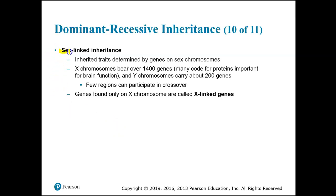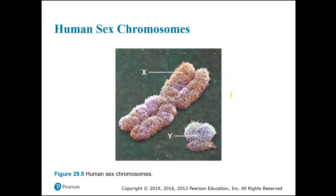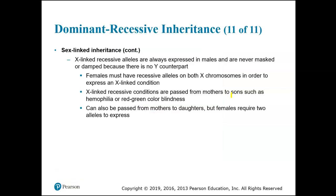Now we're going to move on to sex-linked inheritance. This is when the chromosome that contains the gene for this trait is the X sex chromosome. The gene is not found on the Y. So it's sex-linked, or X-linked, because the Y sex chromosome does not have that gene. These genes are only found on the X sex chromosome. If you're a male and you only have one X sex chromosome, you always express an X-linked recessive allele. If you're female, you still have to have two recessive alleles to express it.